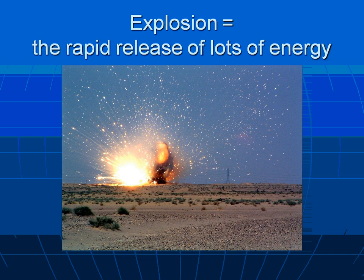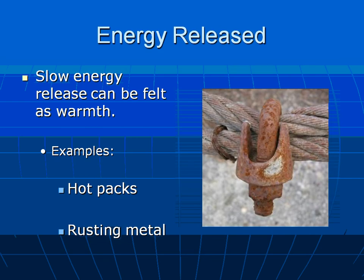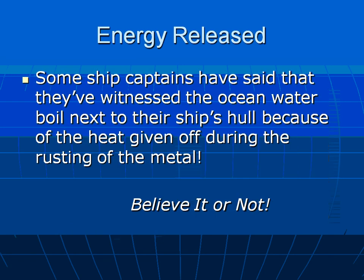Here are some examples of a rapid release of energy. Sometimes the energy is released slowly, and we can feel that slow release as warmth. For example, chemical hot packs that we use for treating people who are cold. The rusting of metal is a reaction that slowly releases heat, and so that would be felt as warmth rather than an explosion.